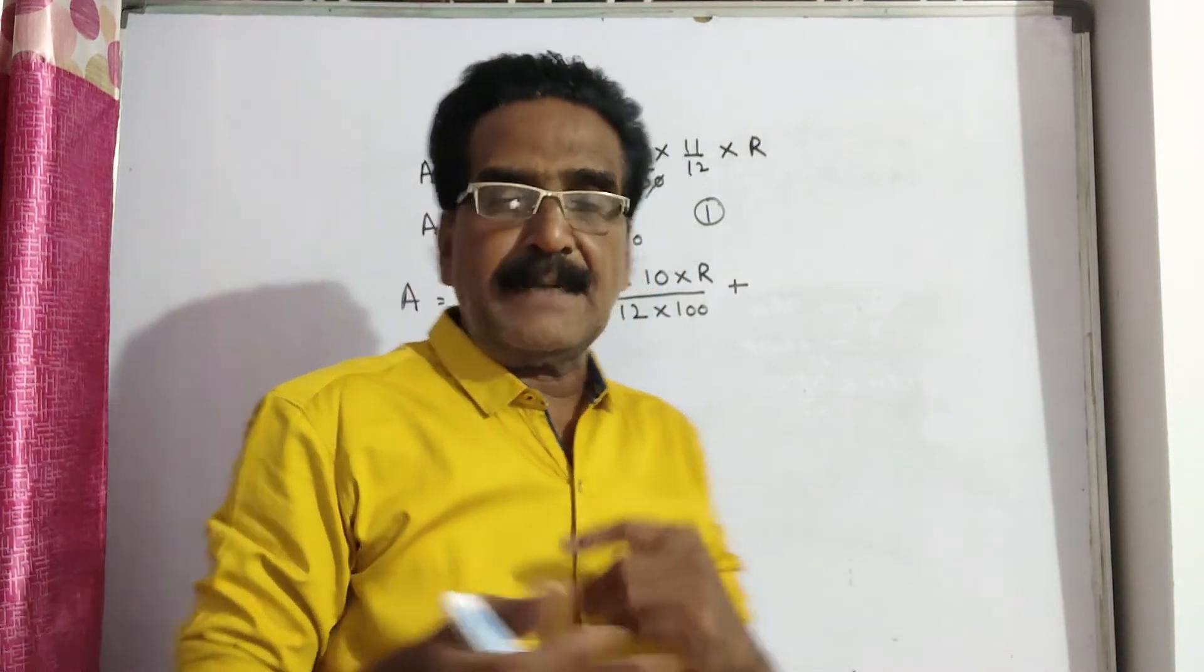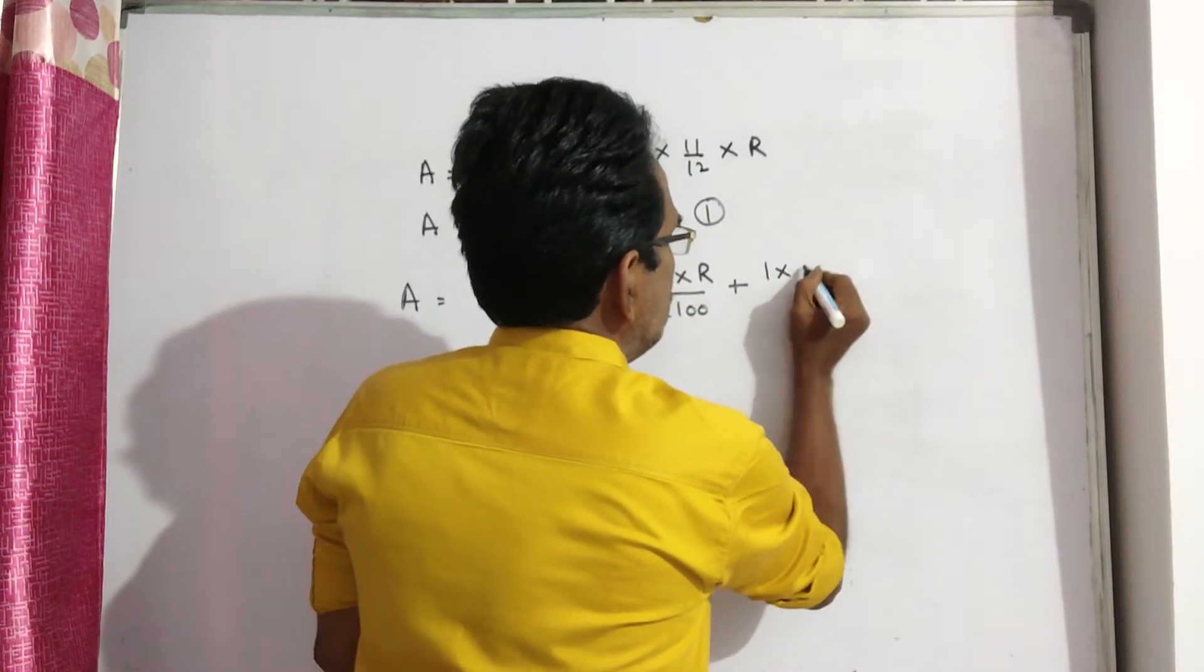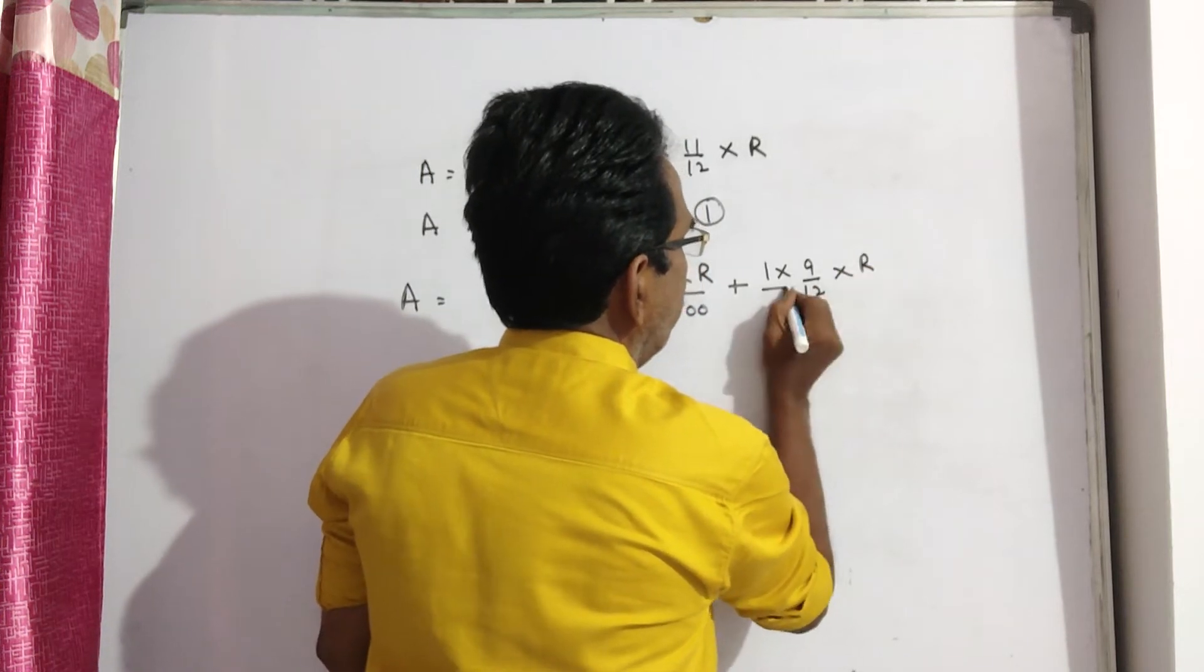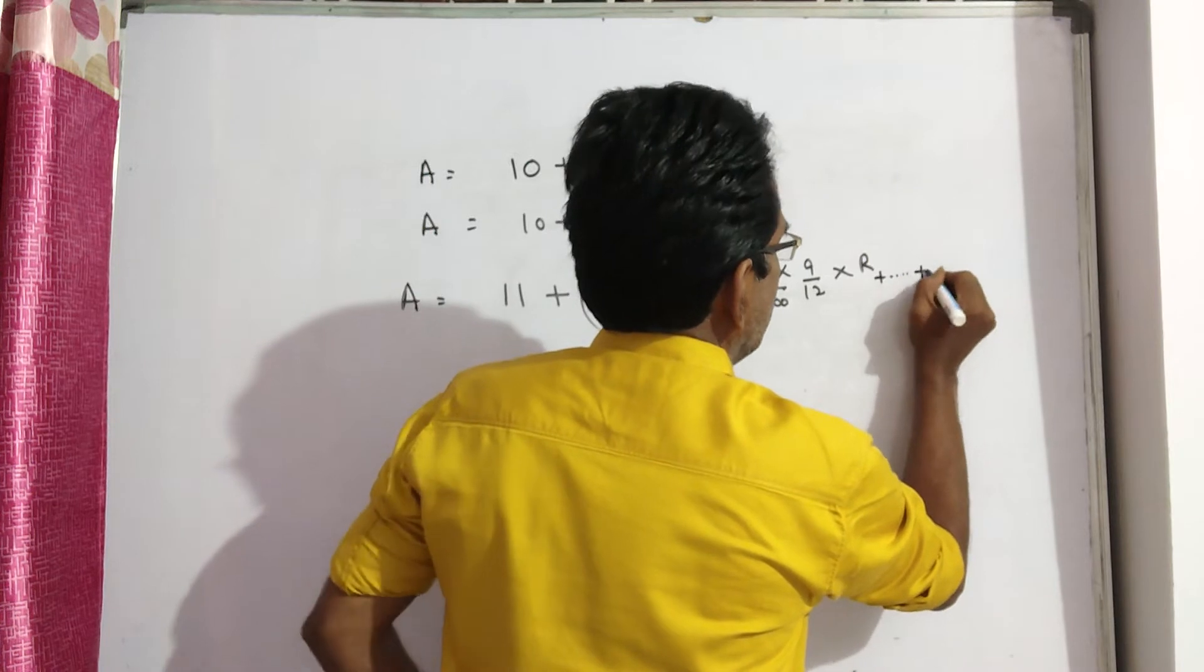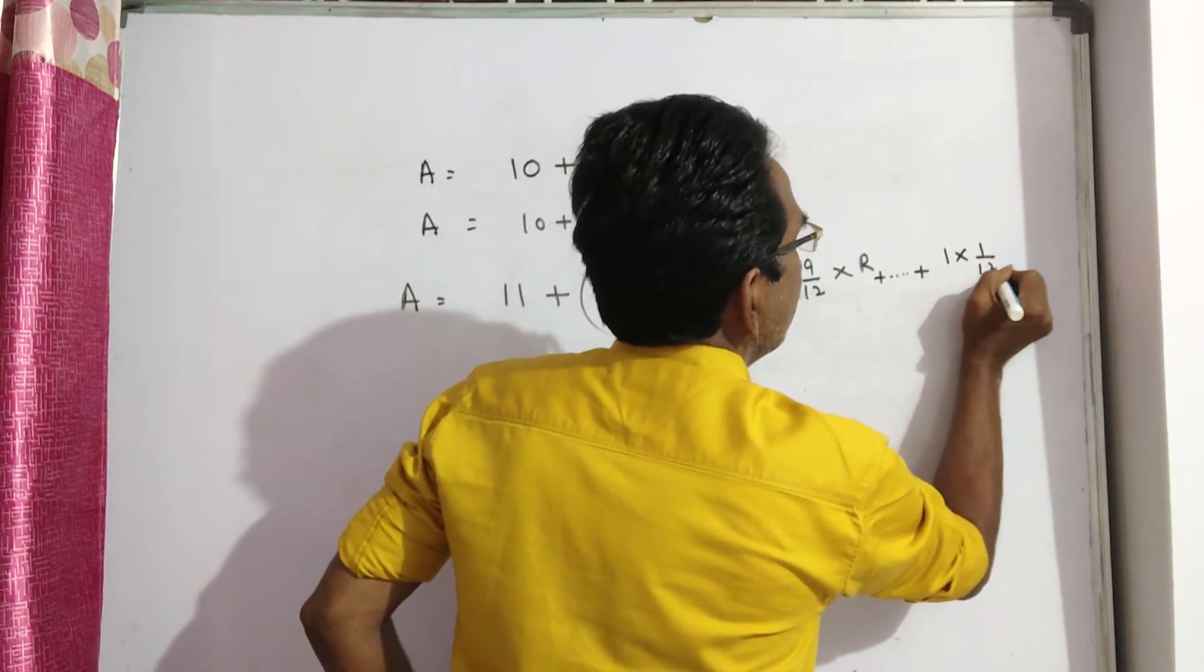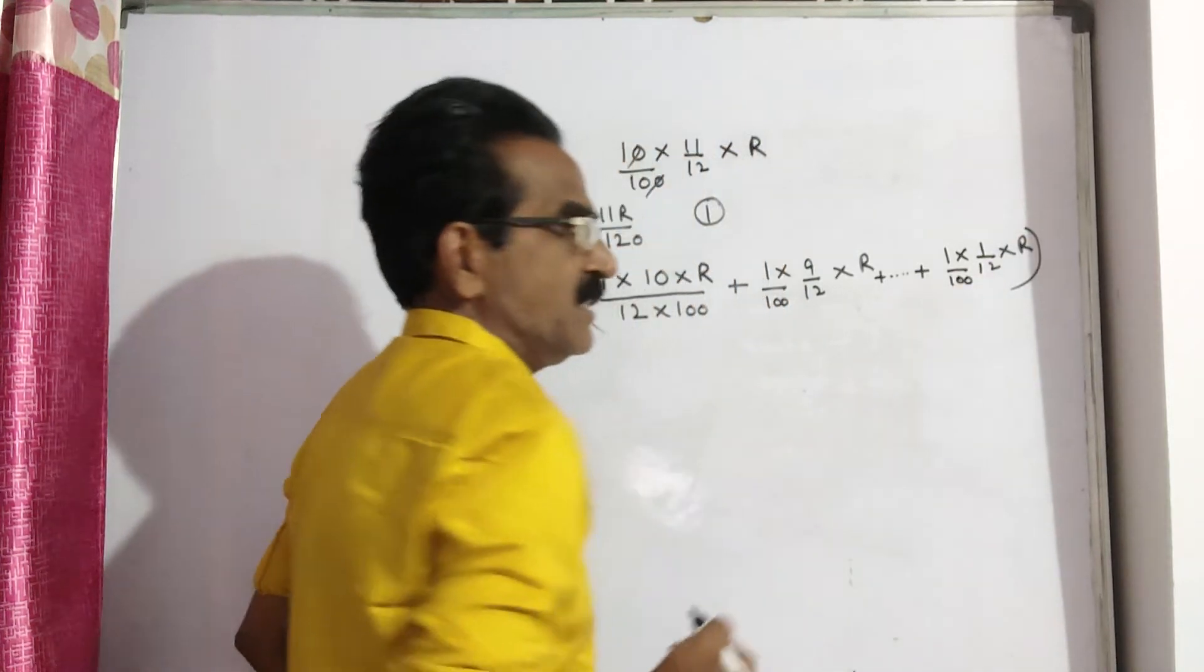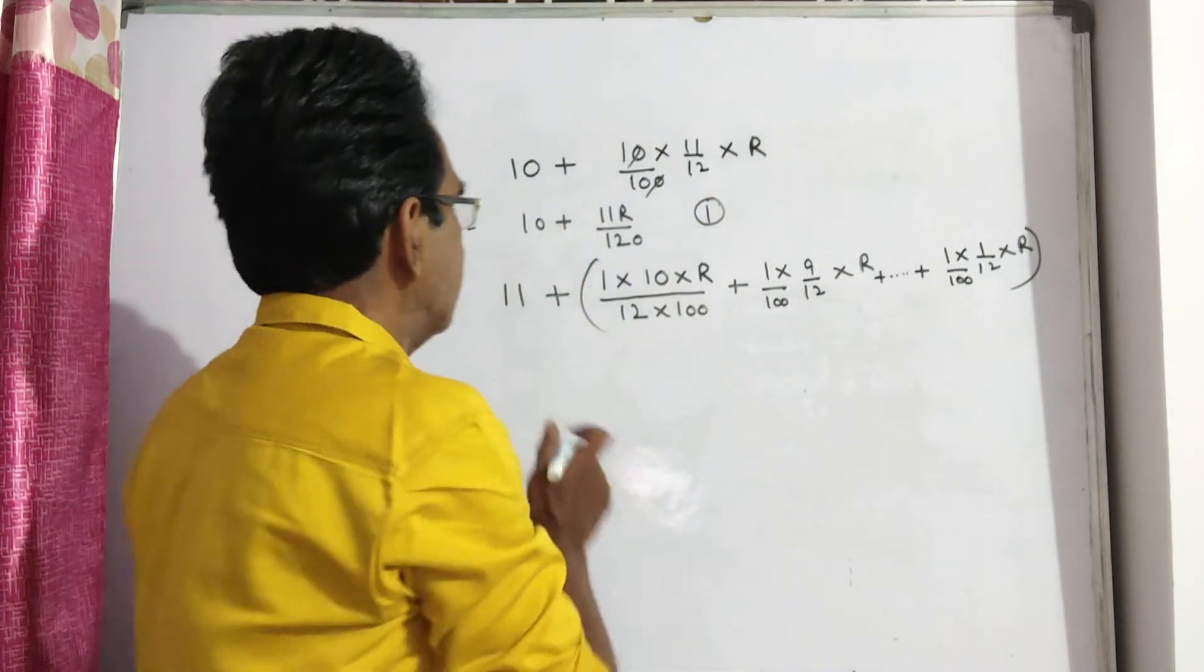Interest paid at the end of second month will get interest for 9 months: 9 by 12 into R by 100, and so on. This continues to the 10th installment. For the 11th installment, we don't get any interest.